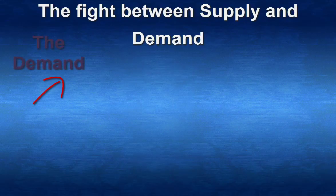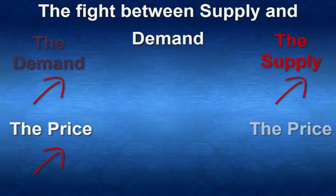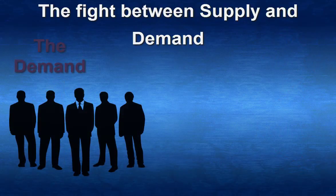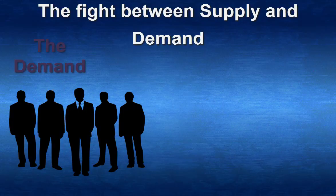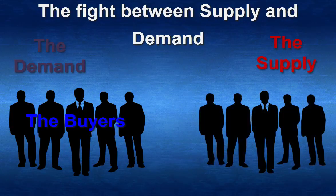When demand rises, the price rises. When supply rises, the price falls. The demand represents the people who want to buy — the buyers — and the supply represents the people who want to sell — the sellers.